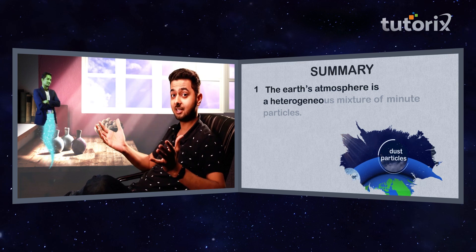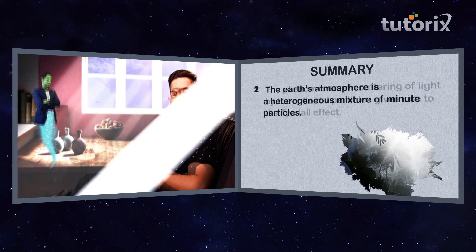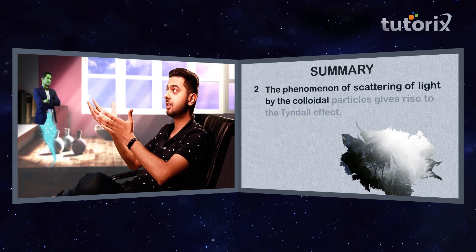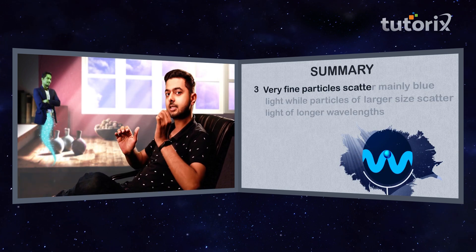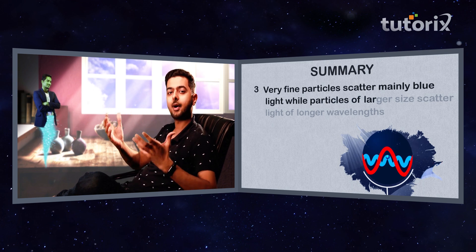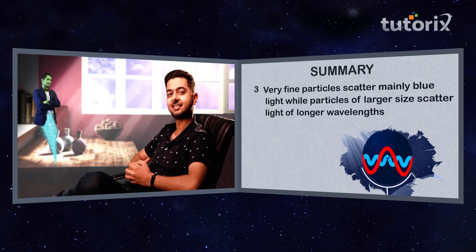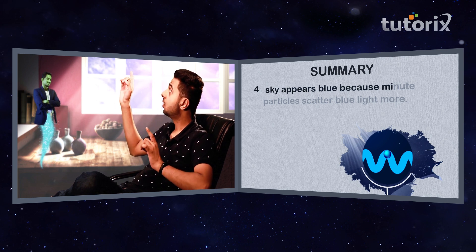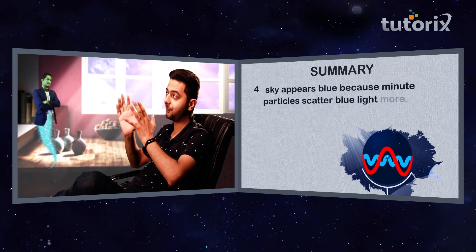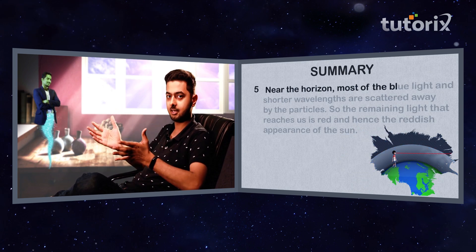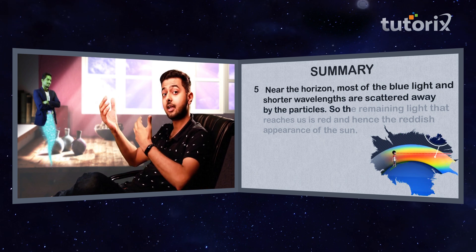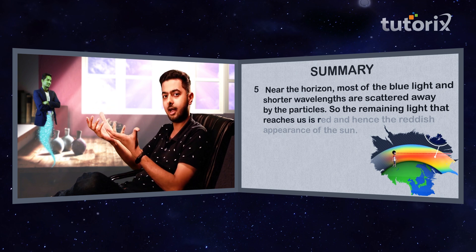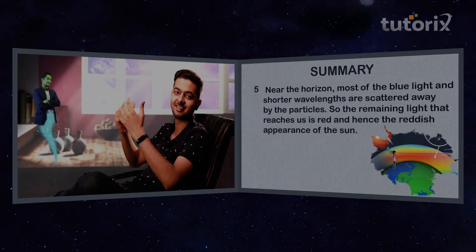So, what have we learned? The Earth's atmosphere is a heterogeneous mixture composed of minute particles. The phenomenon of scattering of light by colloidal particles gives rise to the Tyndall effect. Very fine particles scatter only blue light, while larger particles scatter light of longer wavelengths. The sky appears blue because fine particles scatter blue light more. During sunset near the horizon, most of the shorter wavelengths — blue light — get scattered away, and the light that remains, like orange and red, reaches our eyes — hence the reddish color of the sun.